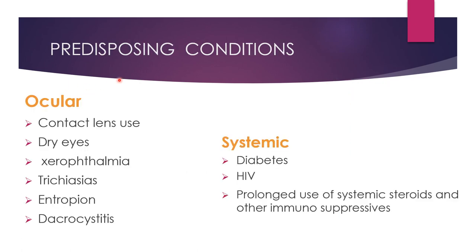There are predisposing conditions which may lead to development of corneal ulcers — either local ocular factors or systemic immunocompromised states. One of the most common local predisposing factors is the use of contact lenses. Overuse of contact lenses, improper cleaning, and not removing them during sleep causes irritation and inflammation of the corneal surface, especially in hot weather, which can lead to bacterial keratitis — especially Pseudomonas — which can become aggressive and lead to loss of vision.